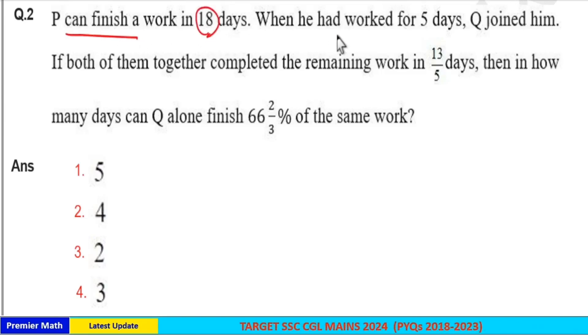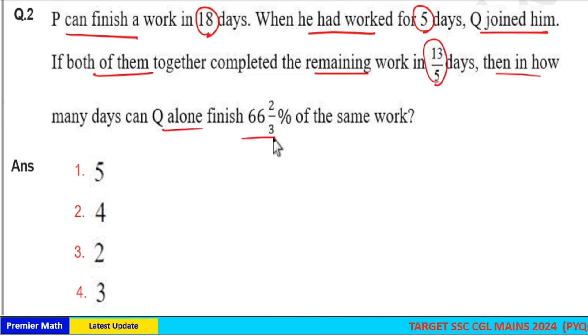P can finish a work in 18 days. When he had worked for 5 days, Q joined him. If both of them together completed the remaining work in 13 by 5 days, then in how many days can Q alone finish 66 and 2 by 3 percentage of the same work?